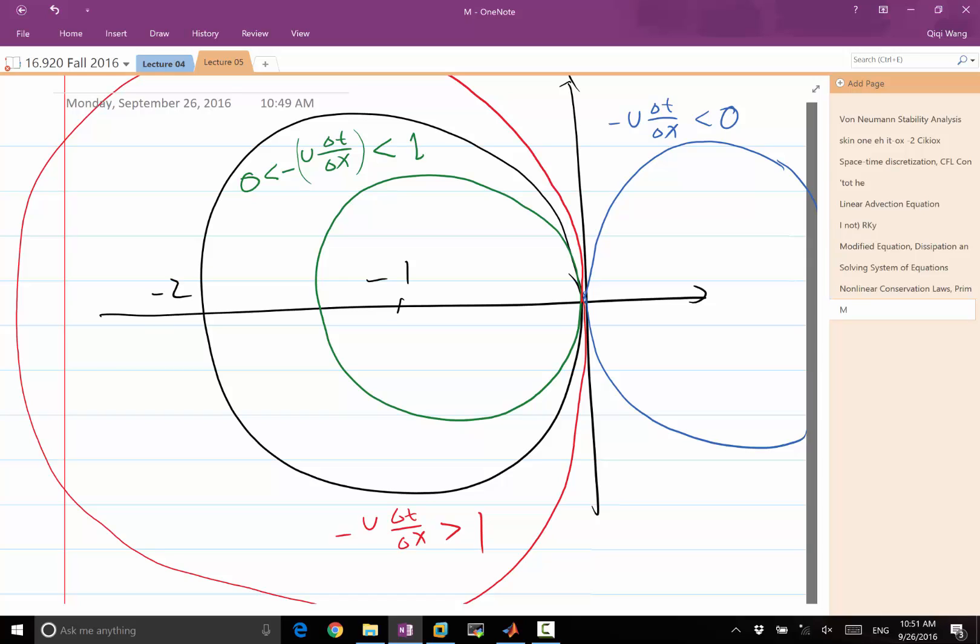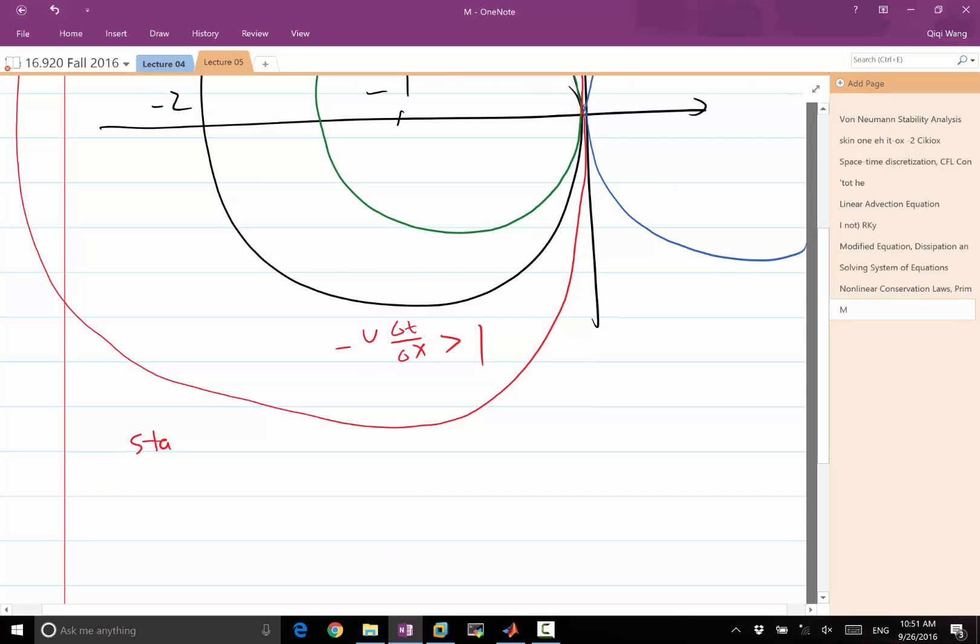The third case is minus u delta t over delta x is greater than 1. That means the green circle is going to expand beyond the stability region. It'll be a red circle that is like that. Again, it is completely beyond the stability region. Therefore, it doesn't work. So the scheme we just derived only works if u is negative and u times delta t over delta x has a magnitude less than 1.